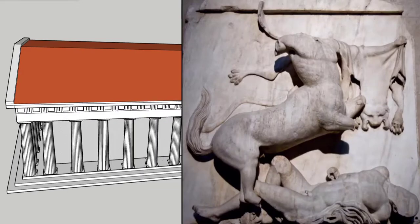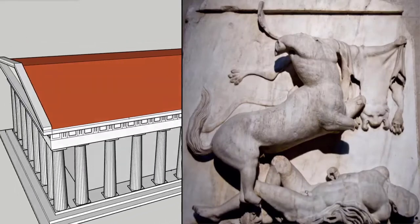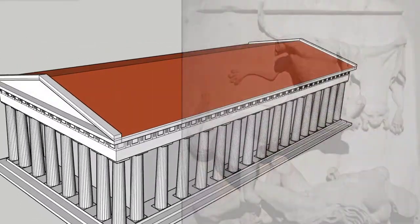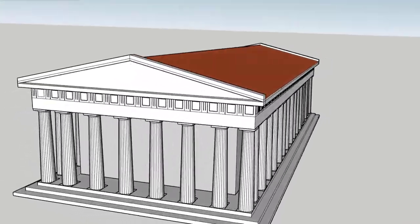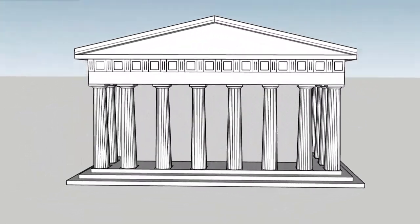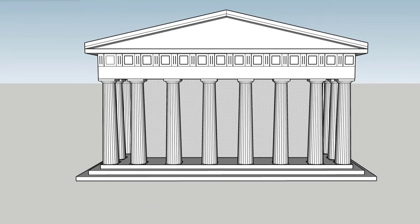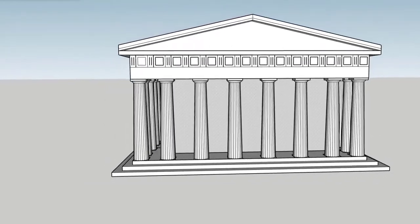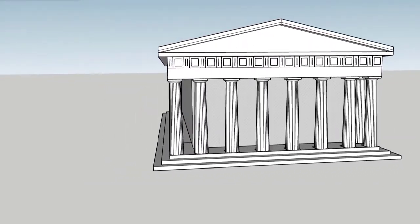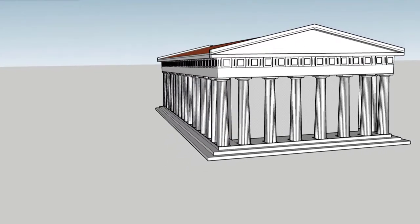And how do we square that image of the culture it stands for with some of the dubious decisions made by the Athenian democracy, for example, the way they turned the Delian League into a protection racket? We seek to solve this problem by looking to form over content and returning to the notion of harmonious proportion.